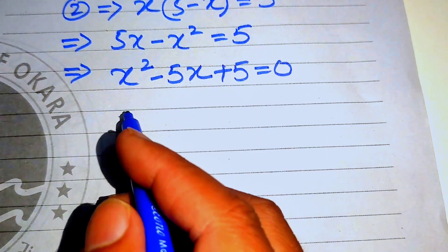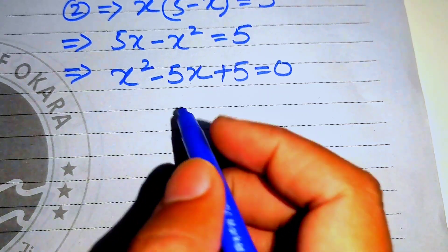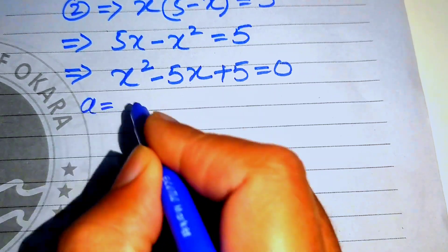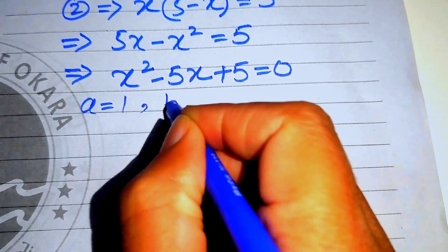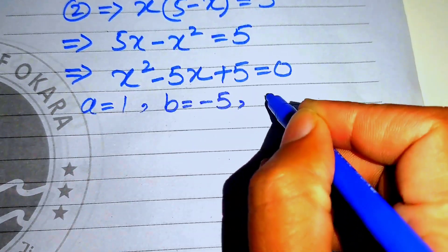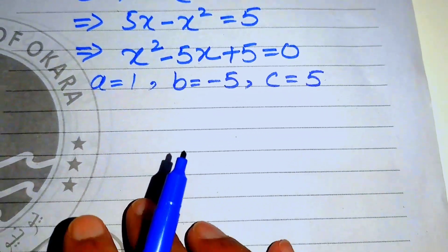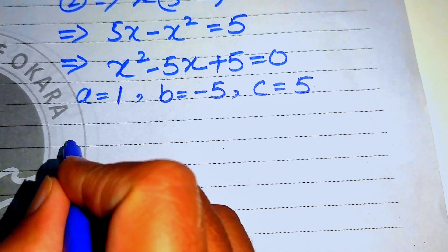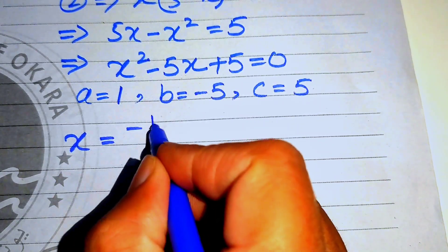Now we use the quadratic formula to solve this equation. We write the coefficients: a equals 1, b equals minus 5, and c equals plus 5.